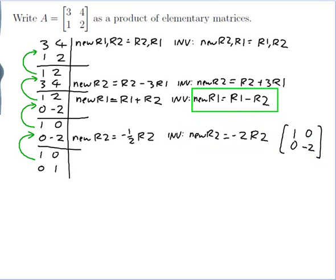Next, start with the identity again and do 'new row 1 is row 1 minus row 2.' Taking row 1 of the identity and subtracting row 2: 1 minus 0 = 1, and 0 minus 1 = minus 1. So the elementary matrix is [[1,−1],[0,1]].